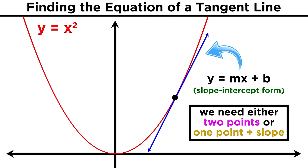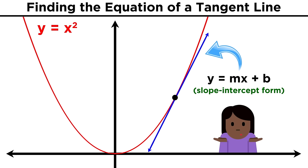If we recall our algebra, we know that to get the equation of a line in slope-intercept form, we either need any two points on the line, or we need one point and the slope of the line. But alas, we don't have this information. We just have the one point.